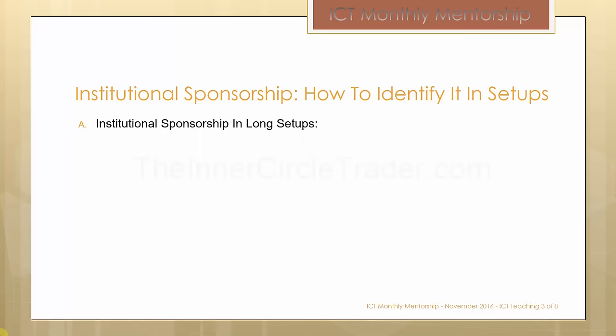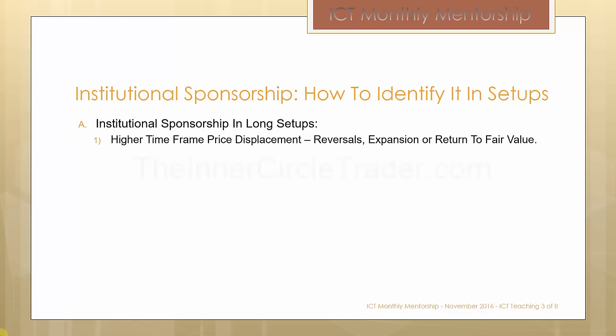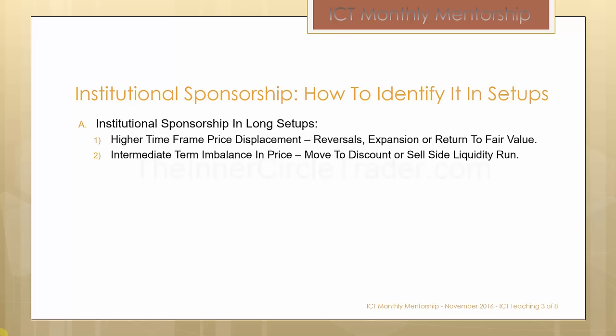First we're going to look at institutional sponsorship in long setups. The key to identifying institutional sponsorship in long setups is the notation of a higher time frame price displacement — that can come in the form of a reversal, an expansion, or a return to fair value. Also relevant is an intermediate term imbalance in price — a move to discount or a sell side liquidity run.